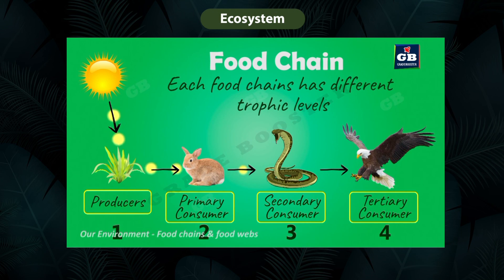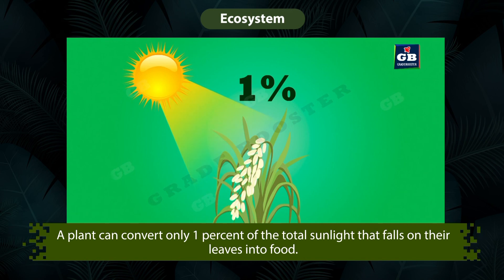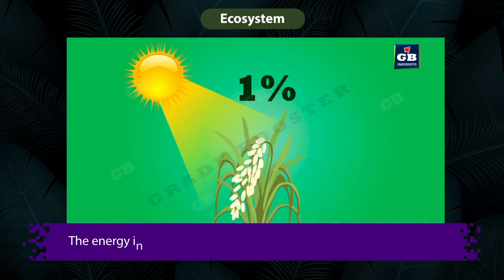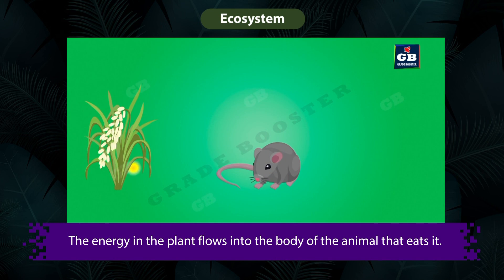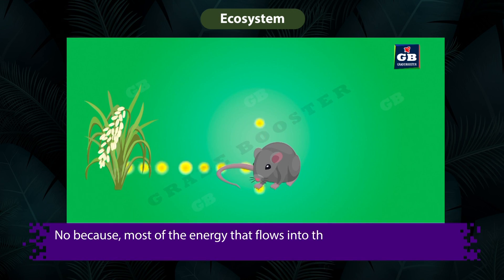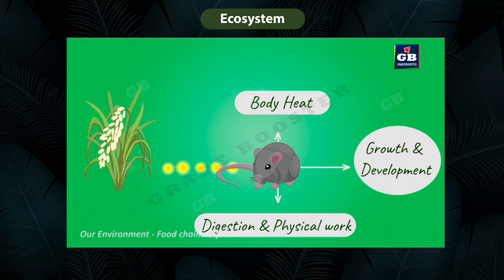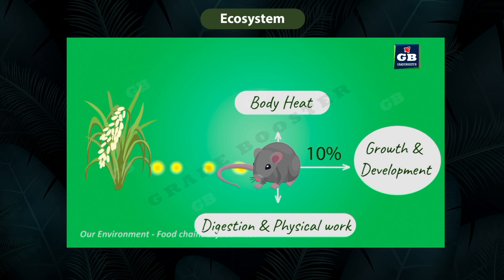Now let us learn some important points about energy flow in a food chain. A plant can convert only one percent of the total sunlight that falls on its leaves into food. Most of the energy that flows into an animal's body is released as body heat; some is used for digestion and other physical activities. Only the remaining energy is converted into the body tissues of that animal.